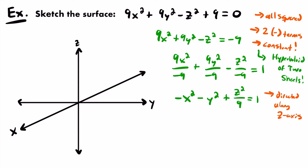To find the z-intercepts where the two sheets extend from, set x = 0 and y = 0. Both of those terms become zero, leaving z²/9 = 1. Solving: z² = 9, so z = ±3. The z-intercepts for the two sheets will be at z = 3 and z = -3. Label those in the coordinate system.